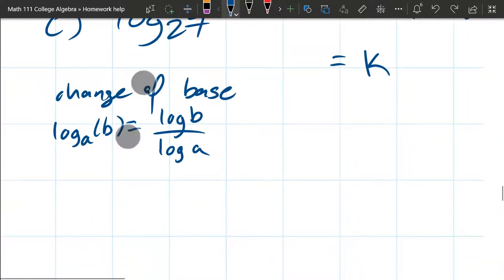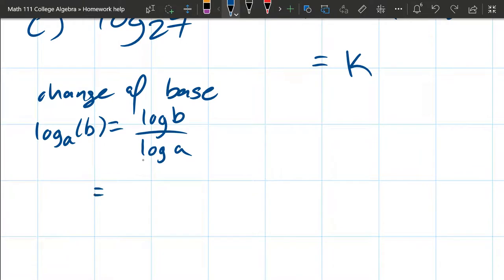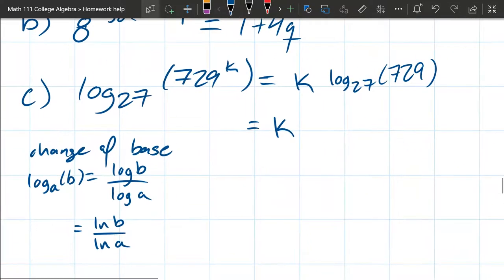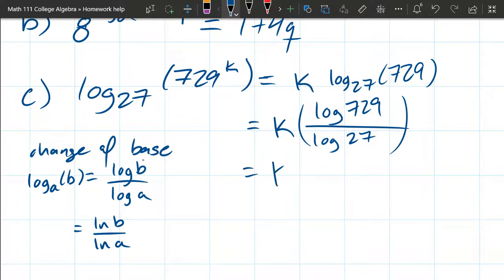Even without a fancy calculator, you should be able to compute log with base 10. If not, you can use natural base which is just ln. So I'm going to write this with a log base 10 of 729 over a log base 10 of 27. And now you can use most any calculator and figure out what these logs are, and then it's just going to be k times that number.